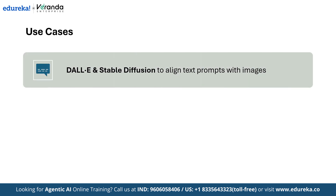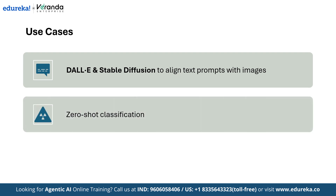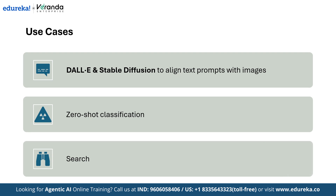CLIP's use cases include: DALL-E and Stable Diffusion, where it aligns text prompts with images; zero-shot classification, where you give it a photo of a dog versus a photo of a cat and it recognizes which one matches the image without retraining; and image search, where it finds images similar to a given caption.